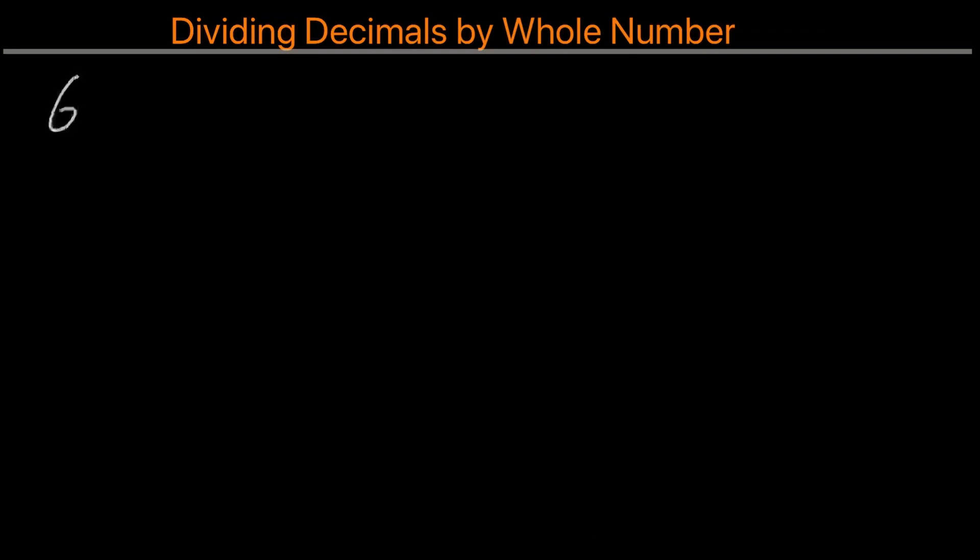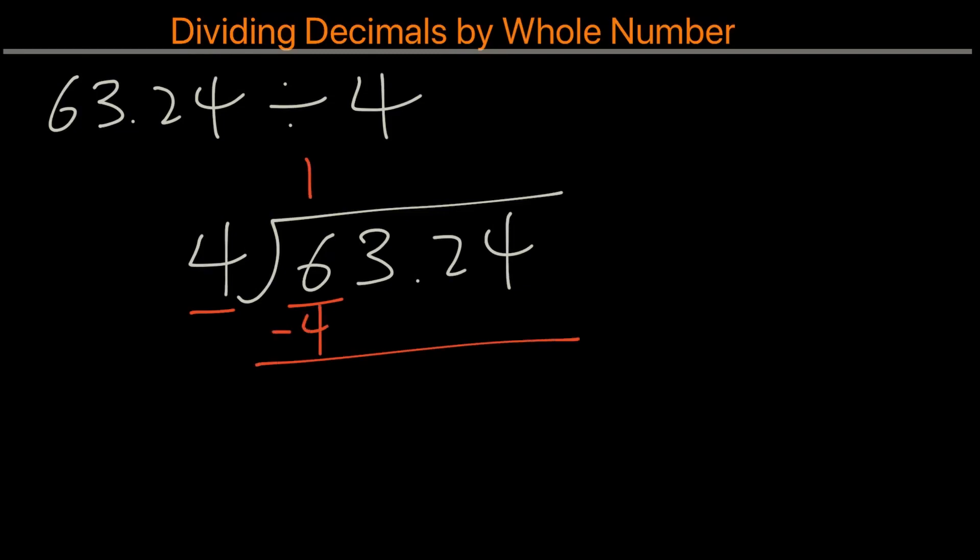Now what about this one? So for this problem, we're going to go ahead again. We'll write out the division. And we'll compare the 6 to the 4. And 1 can go into it. 6 minus 4 is 2. Bring down the 3.